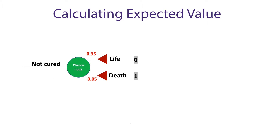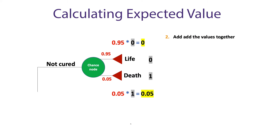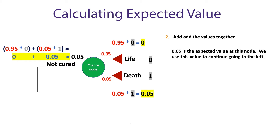Next, we look at the two branches coming from the terminal node and see they come together at a chance node. First, we multiply the probabilities times the values at the terminal node. So, .95 times zero gives us zero, and .05 times one gives us .05. Then we add those two values together: zero plus .05 gives us .05. This tells us the expected value at this node is .05.